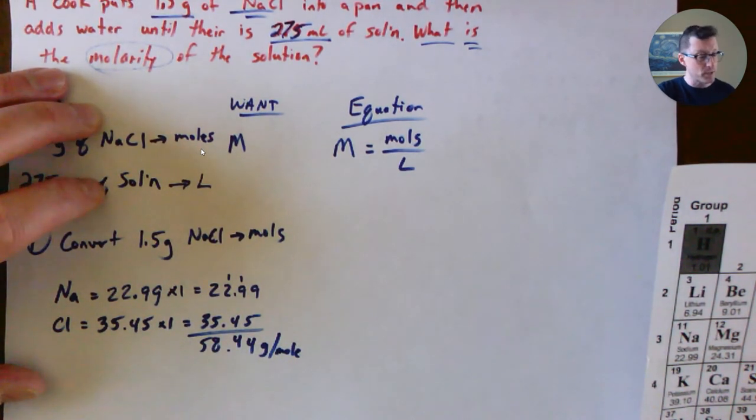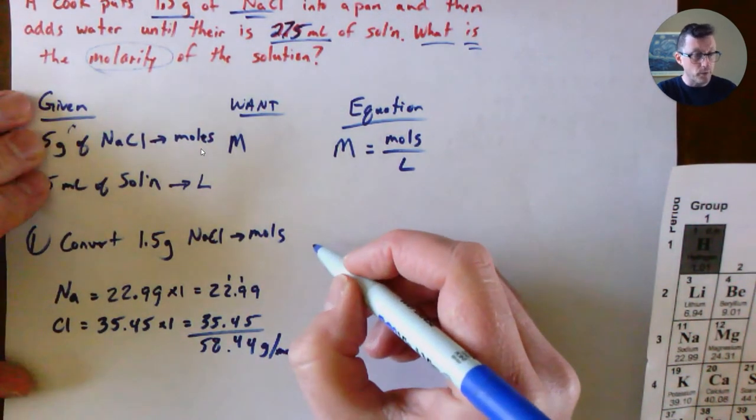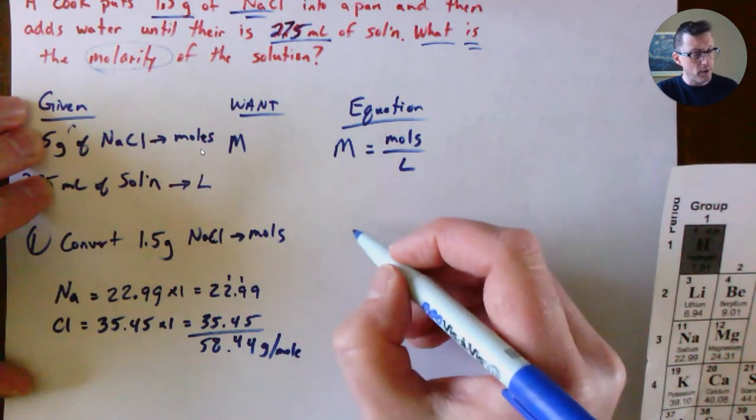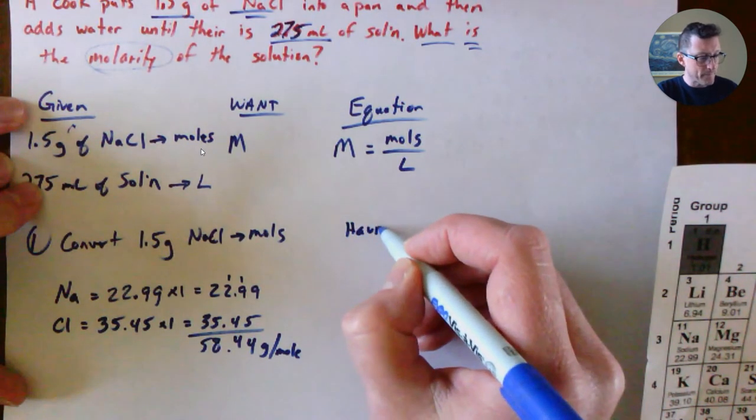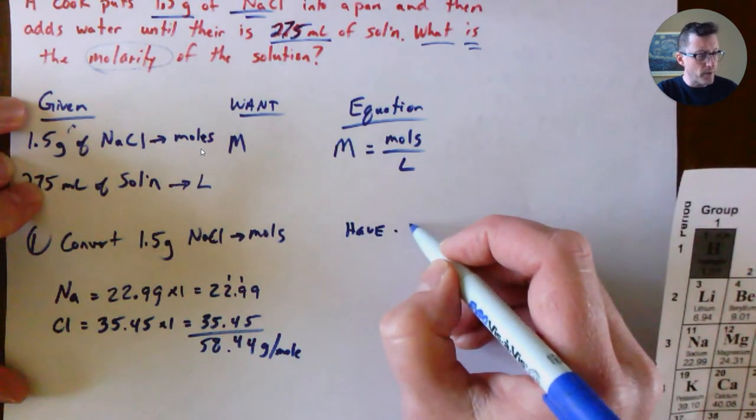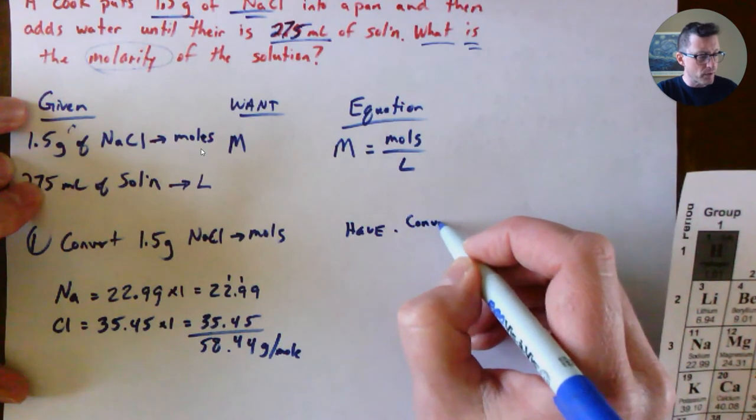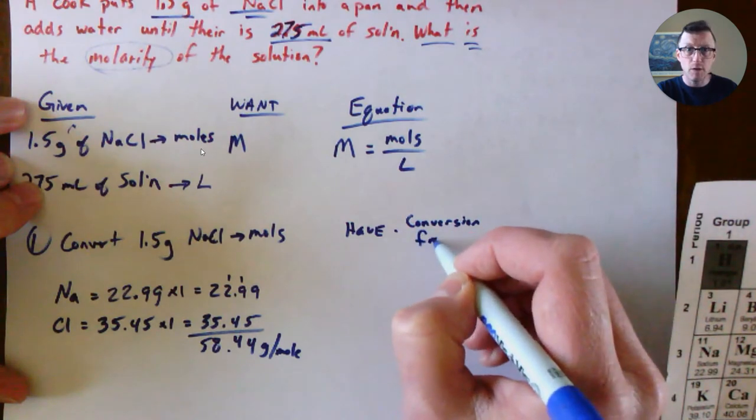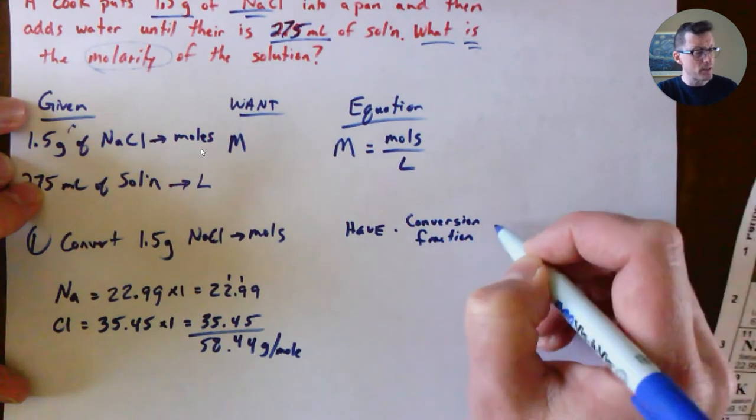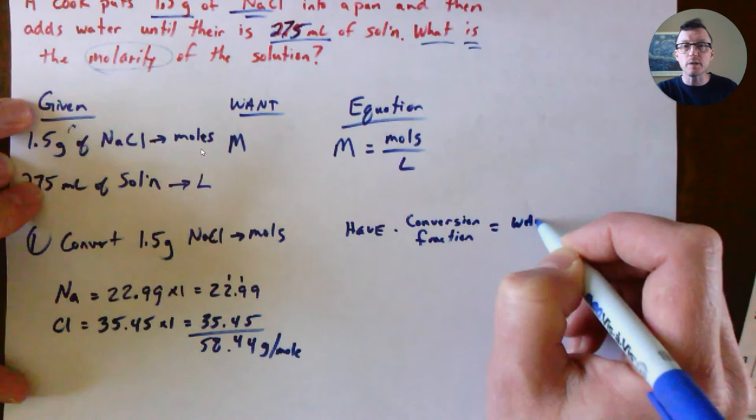One mole is a key thing. Now we set up our math. For our conversion, you take what you have and multiply it by your conversion fraction or factor. When you're done, you should always end with the units that you want.